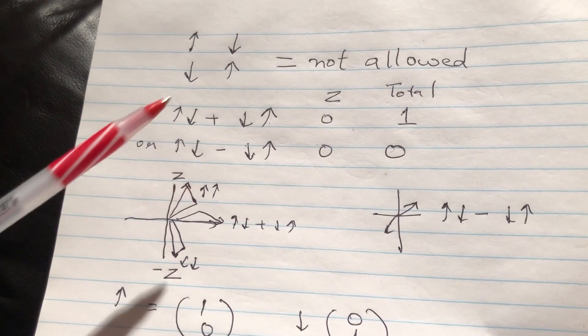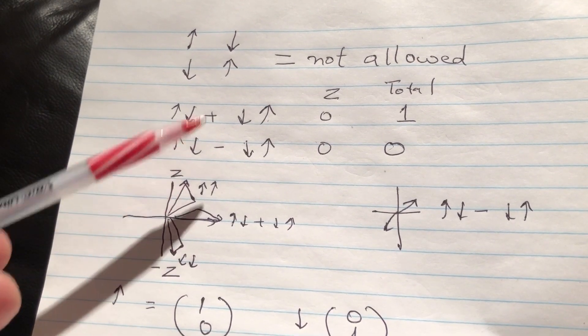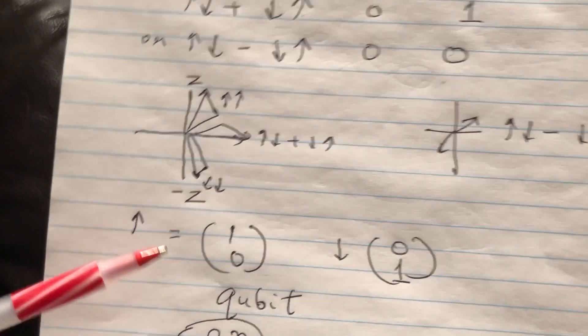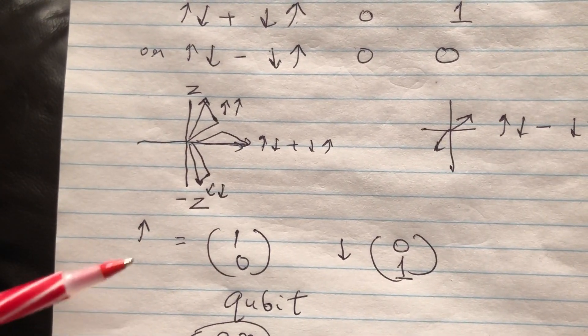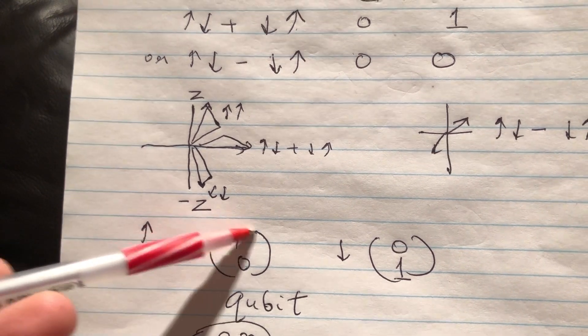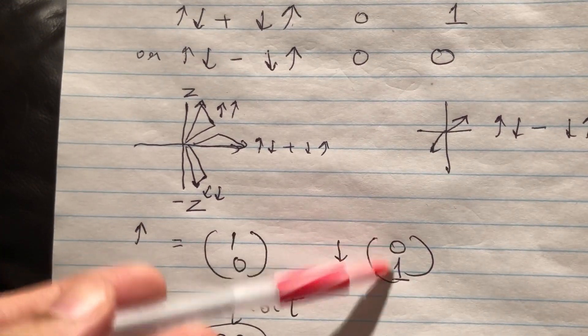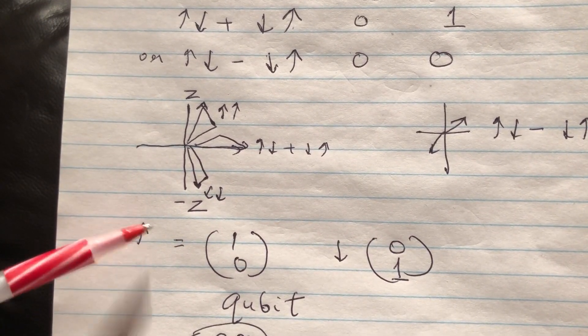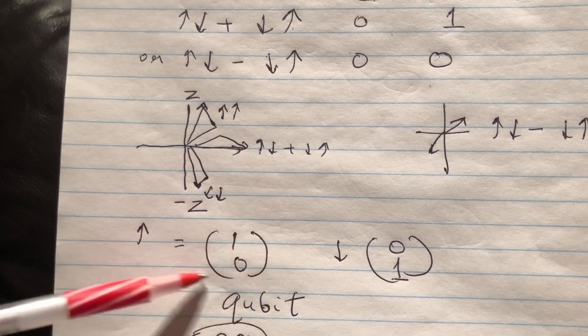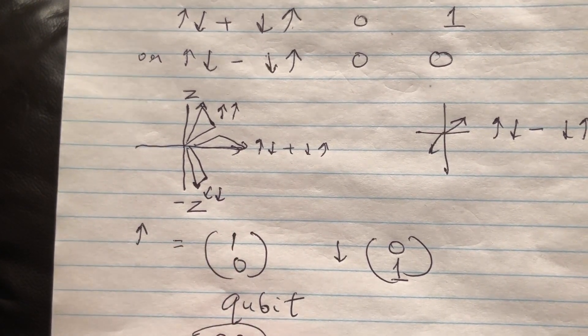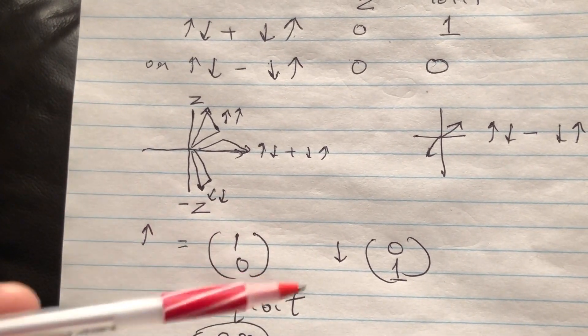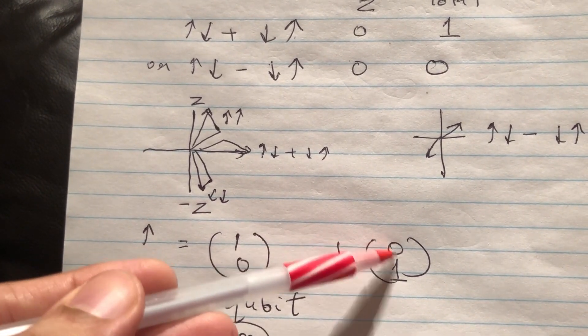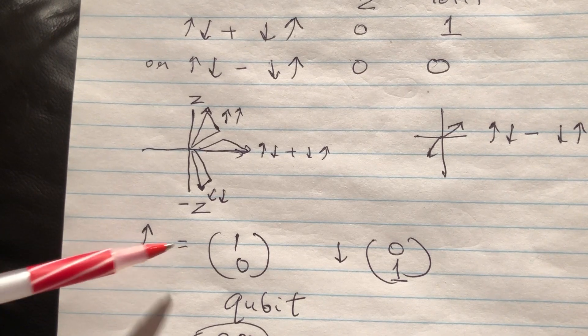The main thing to remember is that in terms of the states, the total number of states are four. In quantum mechanics, matrix notation is also very useful in explaining things. When we say the z component is up, in a matrix notation you can say one zero. This is arbitrary—you could have chosen anything, but one zero is a simple thing to choose. And down would be obviously zero and one. This is called a qubit.